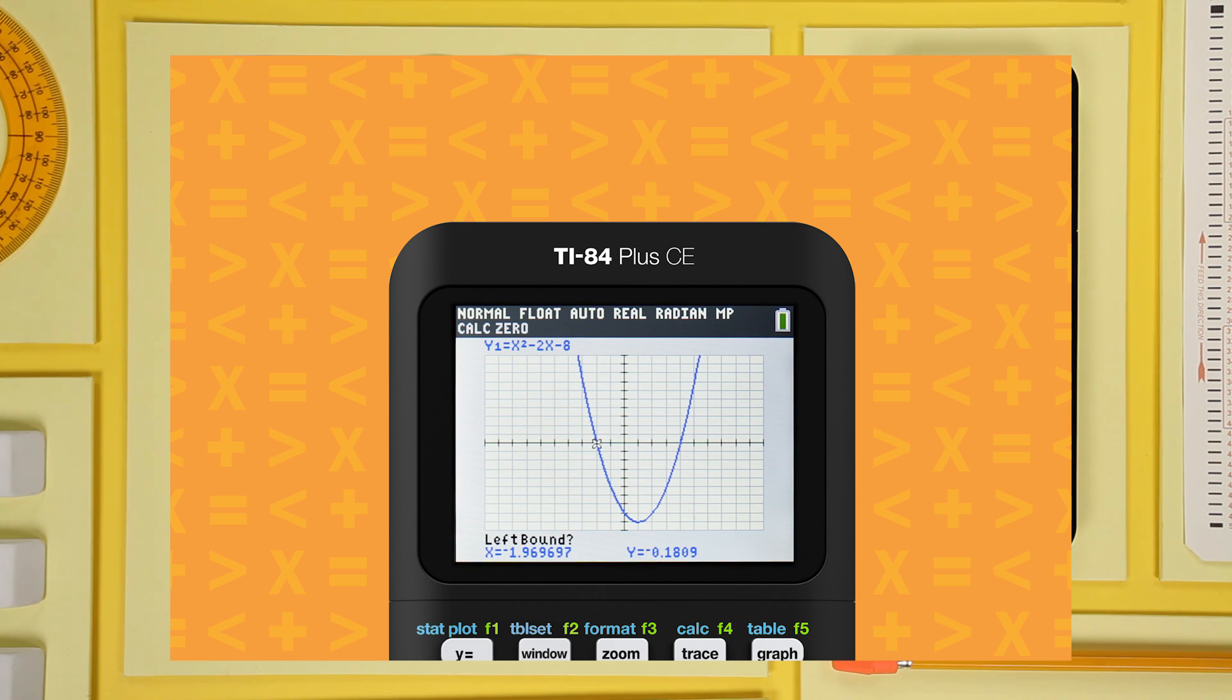Now, let's find the x-intercept. Let's set our boundaries at 1 and 5, and let's make a guess of 4. There it is.